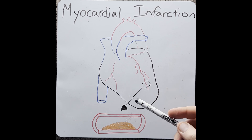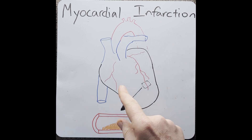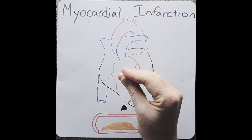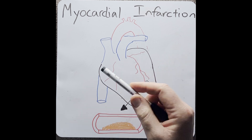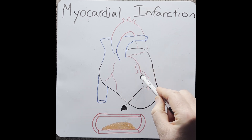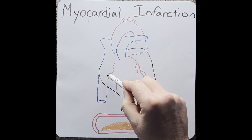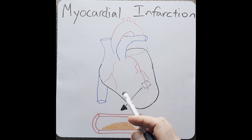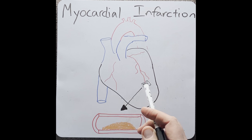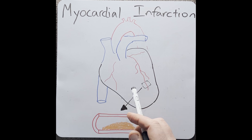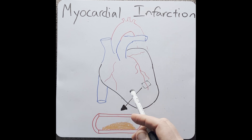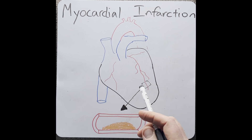Let's see how this happens. The heart's main job is to pump blood around the body, but it needs to pump blood to itself via these coronary arteries. When there's a reduction in blood flow through these coronary arteries, this is termed coronary artery disease or ischemic heart disease.